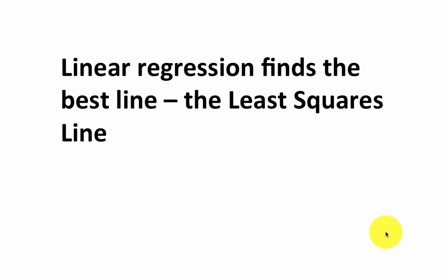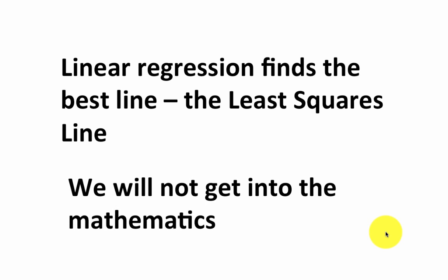Linear regression finds the best line — the least squares line — the line that minimizes the sum of squared errors. We will not get into the mathematics of how exactly that line is found, because using calculus people like Newton have worked out how to find it. We'll be using the R package to perform all of our computations, so all we need to know is how to provide inputs to the R package, how to correctly interpret its outputs, and how to use linear regression in a proper way.